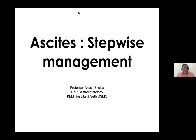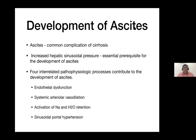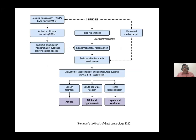Ascites is a common complication of cirrhosis. The prerequisite for its development involves interrelated pathophysiological processes: endothelial dysfunction in the splanchnic circulation causing excessive NO production and splanchnic vasodilatation, severe sodium and water retention, and sinusoidal portal hypertension. Because of cirrhosis, there is increased gut permeability and increased bacterial translocation giving rise to PAMPs and DAMPs, which activate innate immunity, giving rise to systemic inflammation, pro-inflammatory cytokines, and reactive oxygen species — all of which drive splanchnic arterial vasodilatation.